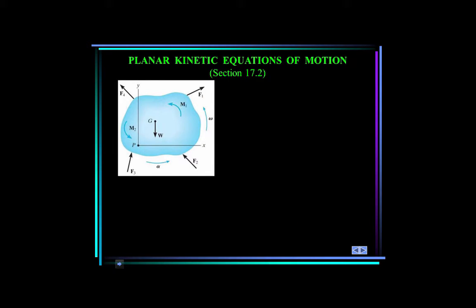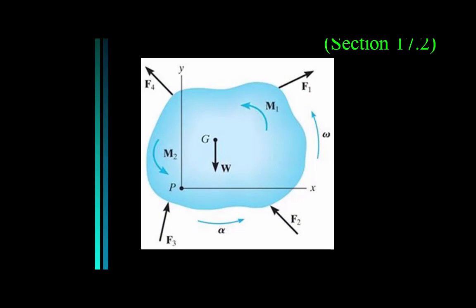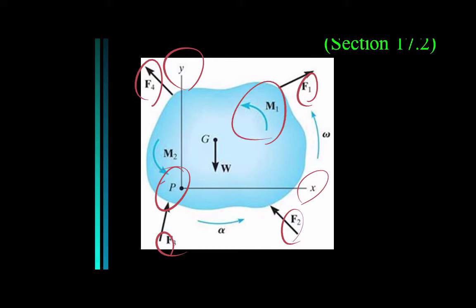Let's discuss the planar kinetic equations of motion. We will limit our study to rigid bodies that are symmetric with respect to a fixed reference plane. As discussed in chapter 16, when a body is subjected to general plane motion, it undergoes a combination of translation and rotation. First, set up a coordinate system with its origin at an arbitrary point P. The x and y axes should not rotate, but can be fixed or translate with constant velocity.